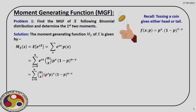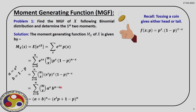After simplification, we get the expression n_C_x · (e^s · p)^x · (1-p)^(n-x). To simplify further, let a = e^s and b = 1-p, so it becomes n_C_x · a^x · b^(n-x), which simplifies to (a+b)^n. Finally, we get the moment generating function for the binomial distribution.